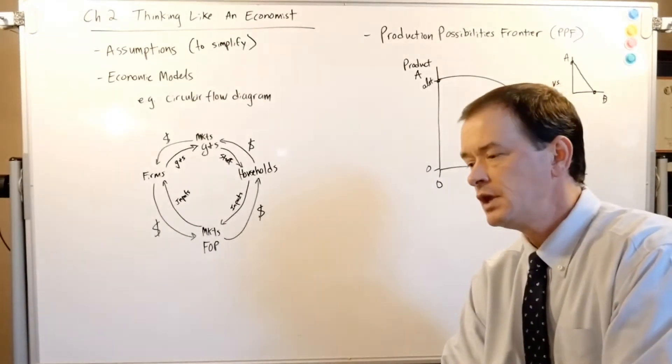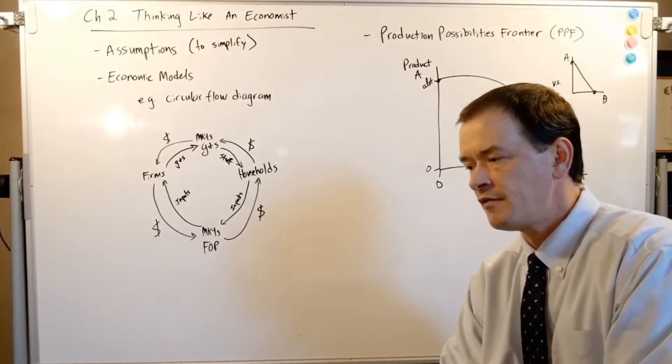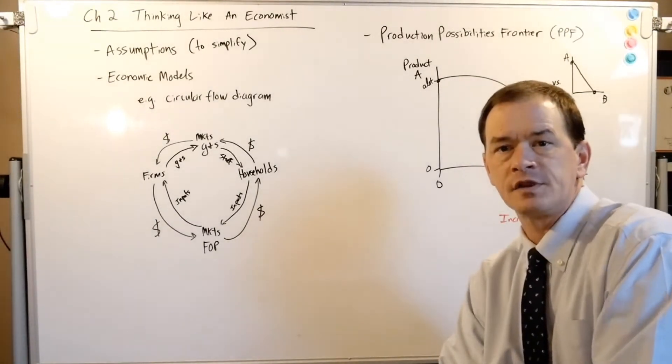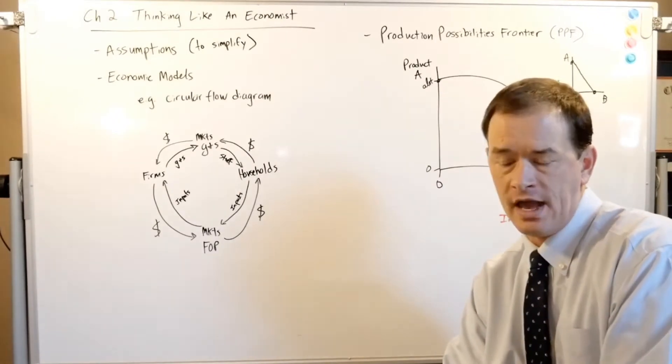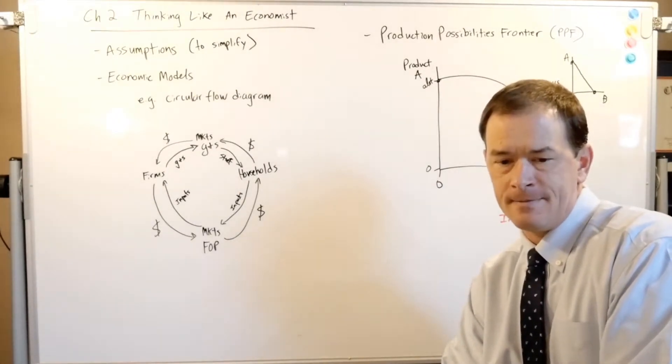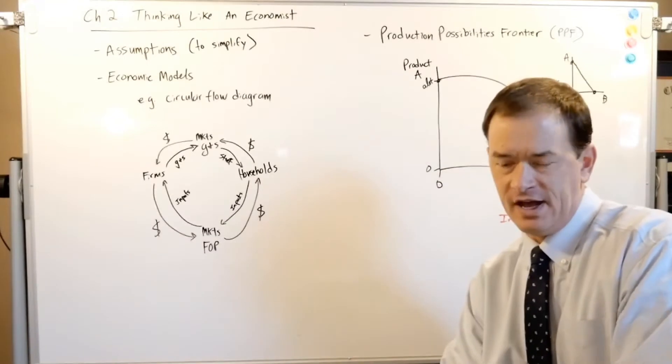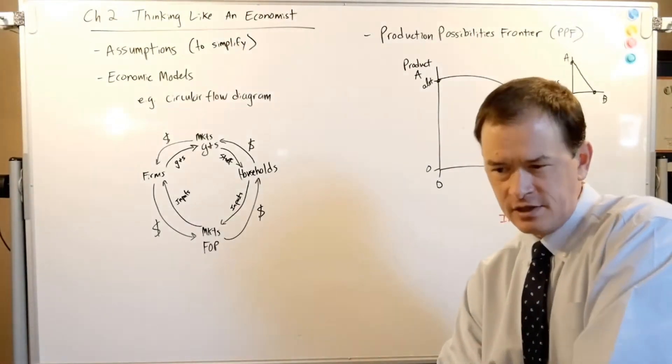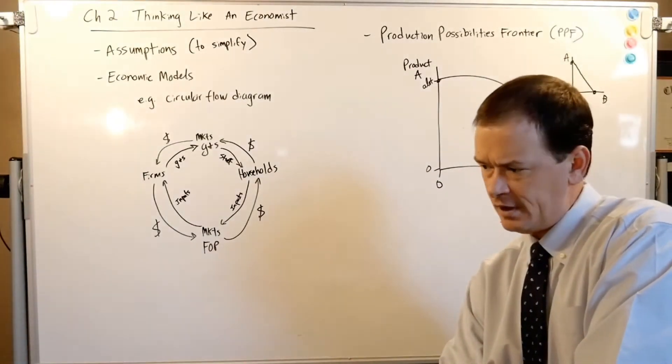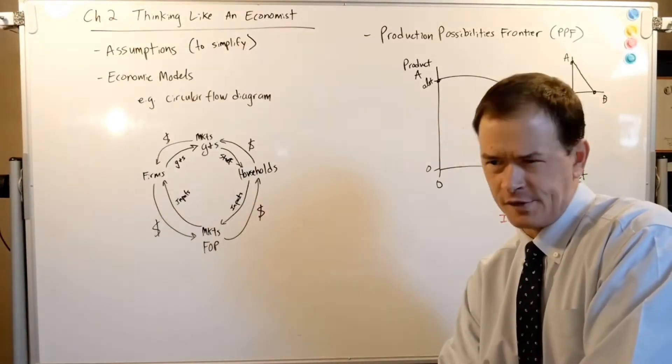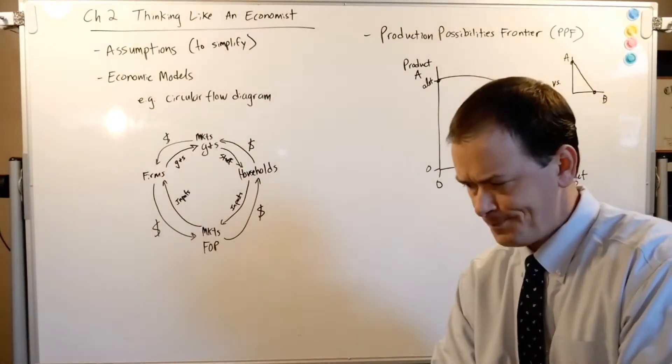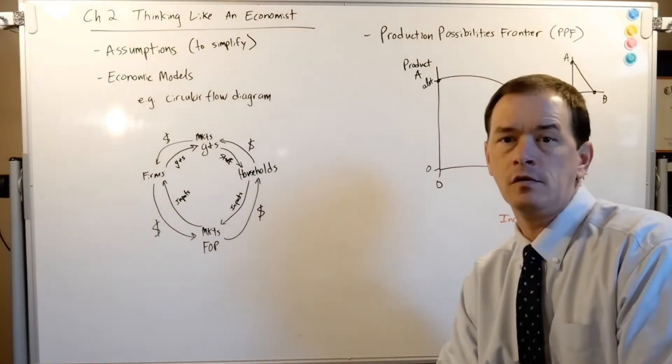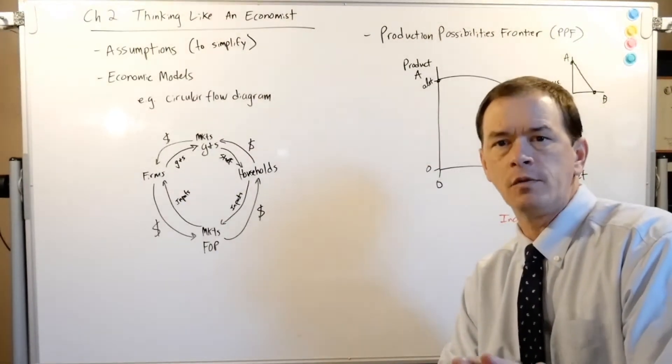But again, let's keep in mind this is a cursory elementary early look at what is economics. And the first thing you have to understand is we have to make assumptions about a dynamic world to make it more of a static situation so that we can make assumptions and simplify and take a look at why the sales of Doritos was up and the purchases of Coca-Cola was down.